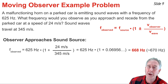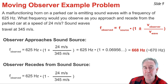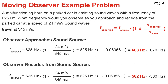For the case of the observer moving away from the horn, all the same numbers go in the same places. The difference is that inside the parentheses I use a minus sign. That makes everything inside the parentheses less than 1. Multiplying by 625 hertz gives 582 hertz as the frequency observed while moving away from the horn. As the observer approaches the source, the observed frequency is higher than the horn's frequency; as the observer moves away, the observed frequency is lower than the horn's frequency.